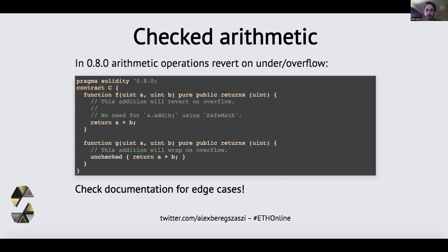But if you actually want the overflow or wrapping-around behavior, we have you covered with the unchecked block. Any piece of code wrapped in an unchecked block won't have overflow or underflow checking generated, so it will behave as it did in 0.7. Please check the documentation for the various edge cases, because it's much more than these two slides could cover.